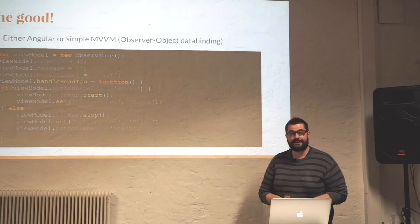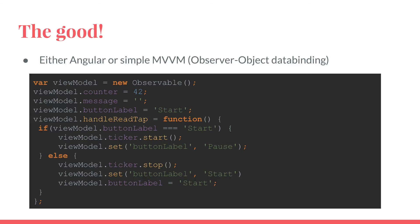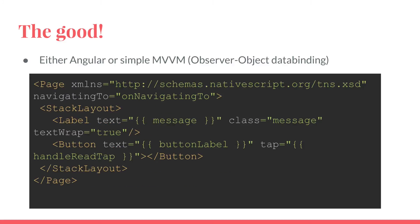What did I like in NativeScript? Angular is nice, and their observer object data binding — the model-view-viewmodel handling — is also nice. They come with a packaged observable: you instance it, set your functions and properties, wire it to your UI, and you're ready to go. That's all you need. It just works. That's very nice.